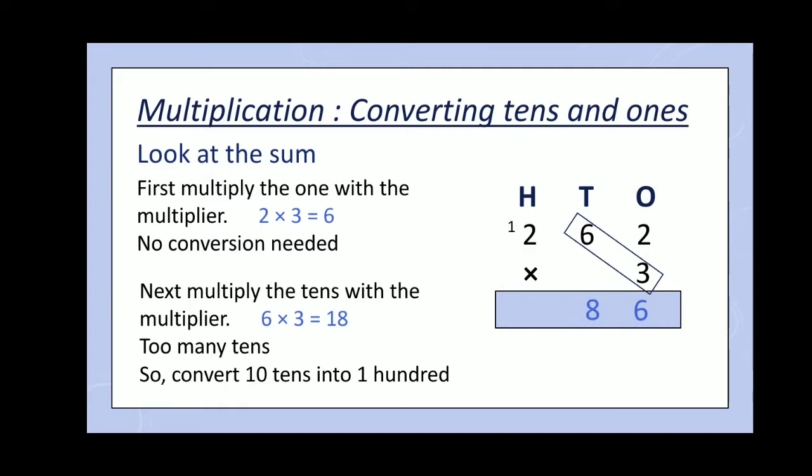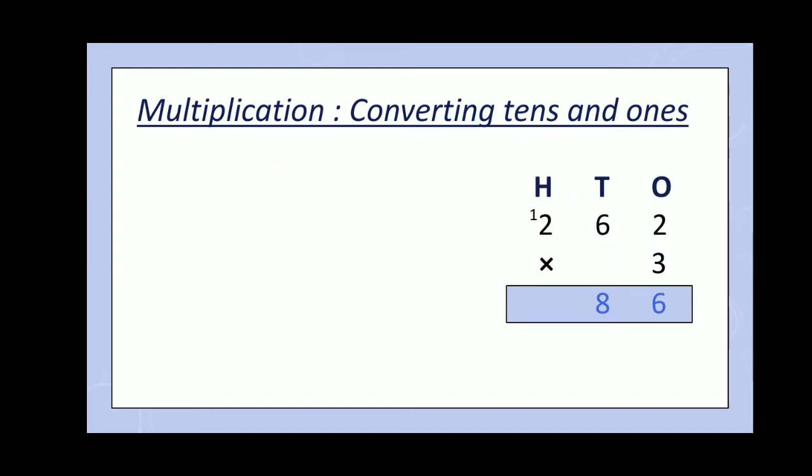After that, multiply the 100 columns with the multiplier that 2 multiplied by 3 is equal to 6. Now remember to add the shifted 1 on 100 column from 10's. So now, 2 multiplied by 3 is equal to 6 and 6 plus 1 is equal to 7.